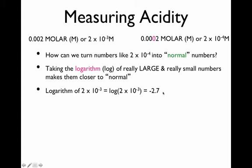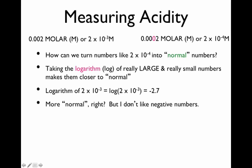But that person went one step further. They said: there's a minus sign here, and I don't like minus signs — they're a bit confusing. The easiest way to get rid of the minus sign is to multiply the answer by −1. So −2.7 multiplied by −1 becomes +2.7. They said: take the logarithm of the molar concentration, then multiply by −1 to eliminate the negative sign.